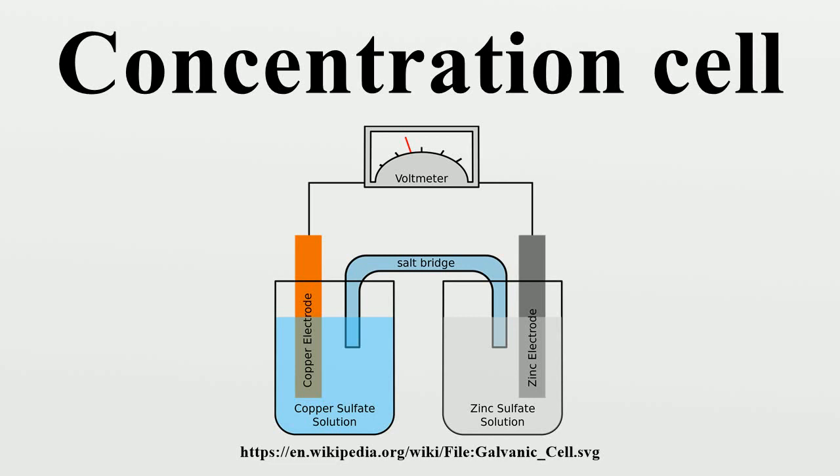One can calculate the potential developed by such a cell using the Nernst equation. A concentration cell produces a small voltage as it attempts to reach equilibrium.